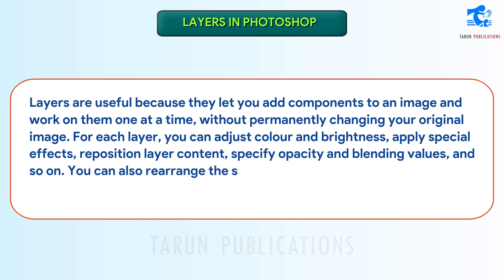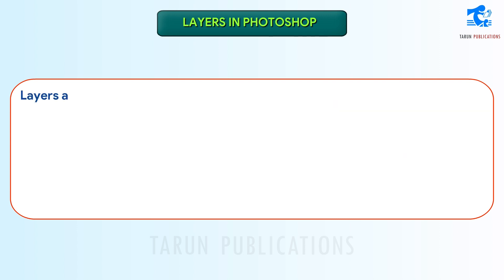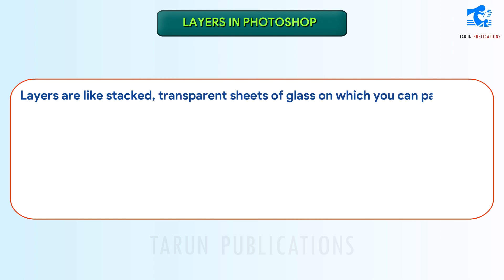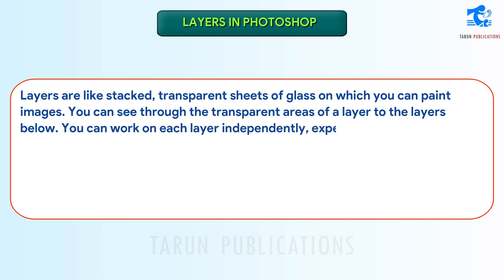You can also rearrange the stacking order, link layers to work on them simultaneously, and create web animations with layers. Layers are like stacked, transparent sheets of glass on which you can paint images. You can see through the transparent areas of a layer to the layers below. You can work on each layer independently, experimenting to create the effect you want.